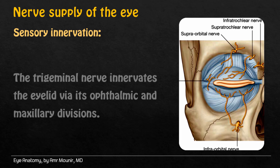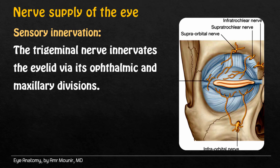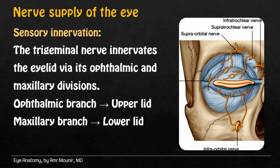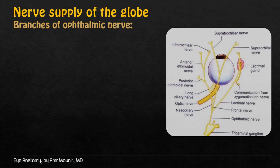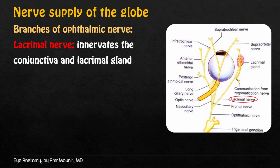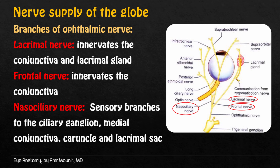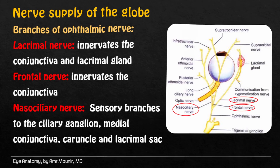Sensory innervation: the ocular nerve innervates the eyelid via the ophthalmic and maxillary divisions, while the ophthalmic branch supplies the upper eyelid and the maxillary nerve branch supplies the lower lid. The parasympathetic part of the ocular nerve innervates the conjunctiva and lacrimal gland. Neasociliary nerve's sensory branches give supply to ciliary ganglia, medial conjunctiva, cruncle, and lacrimal sac.